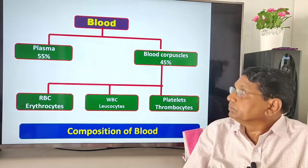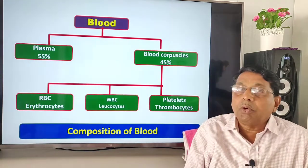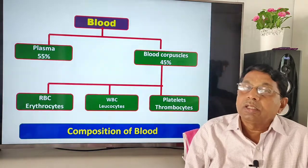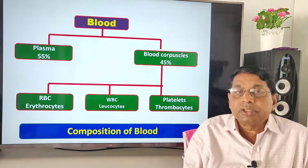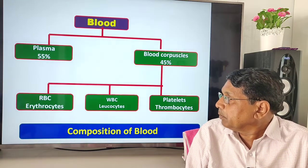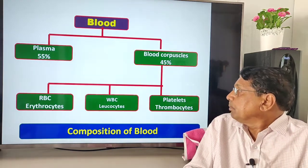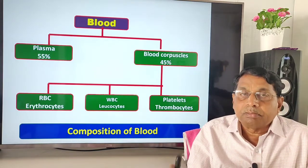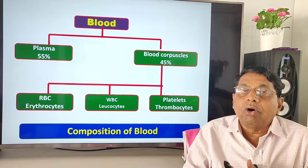This chart shows the composition of blood. Blood contains plasma and blood corpuscles or blood cells. Mass-wise, plasma is more than 50 percent — almost 55 percent — whereas all blood cells together make up 45 percent. The blood corpuscles are of three types: RBC (red blood corpuscles or erythrocytes), WBC (leukocytes), and third, platelets or thrombocytes.